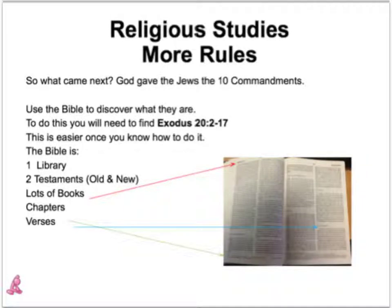Following Adam and Eve, Abraham and Noah, God now gave his next set of rules to Moses. In today's lesson we want to find out exactly what these rules, laws, or as they're more commonly known, commandments were.